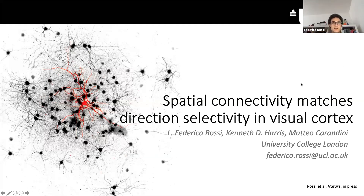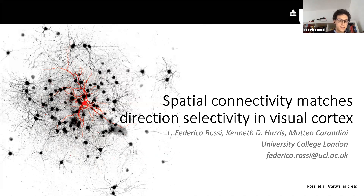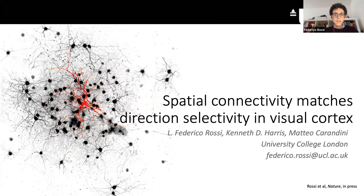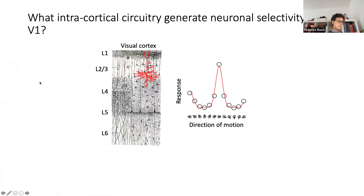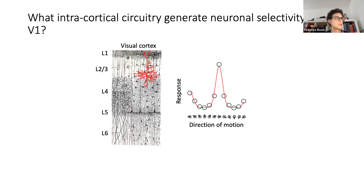Thanks for the kind introduction. Today I will present the work I've done at University College London in the lab of Matteo Carandini and Kenneth Harris, and hopefully it's going to be published soon. The talk is about how spatial connectivity matches direction selectivity in the primary visual cortex. I was interested in how the architecture of excitatory and inhibitory connections orchestrates the response selectivity of neurons in layer 2/3 of the visual cortex.